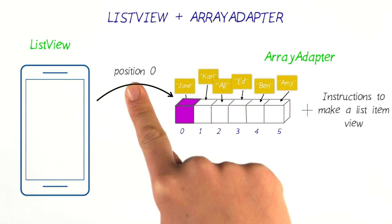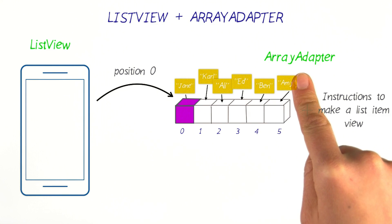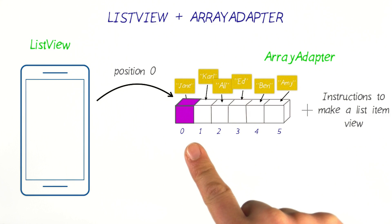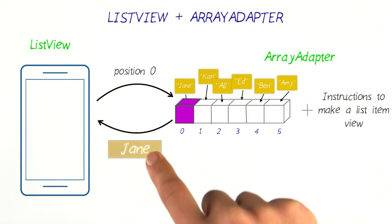But the user might be on the first position or maybe even the hundredth position in the list. Knowing this information, the array adapter checks the internal source of data. It checks the array, or it might check a list if that is the source of data. It gets the information out, and it has instructions that tell it how to create a list item view that it will return to the list view.